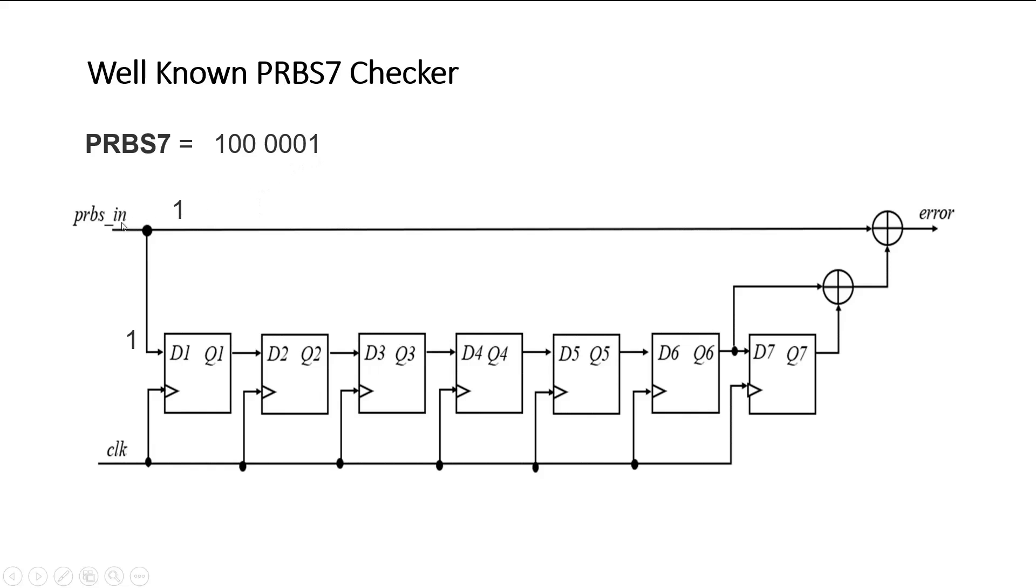When first bit comes on the PRBS sequence, this is applied to the input of first flip-flop at the same time. As soon as the positive edge of the clock comes, this one will be transferred at the output of this first flip-flop. And the second bit will appear at the PRBS sequence input. So this will be applied to the input of first flip-flop again. And when the third bit comes,